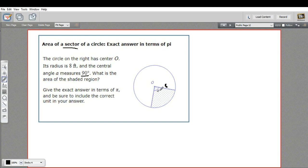If you were to figure out the area of this whole circle, it would be pi times the radius squared. 8 squared is 64. So this whole circle is 64 pi.